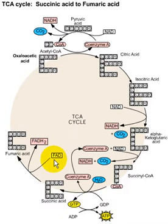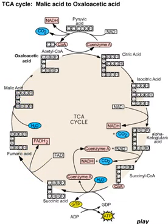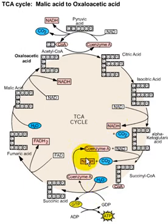In the next step, FADH is produced. Then the next step produces malic acid, and malic acid will become oxaloacetic acid. So in this part of the cycle, NADH is produced here, NADH here, and NADH here — so one cycle produces 3 NADH.